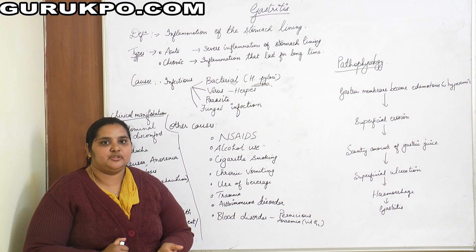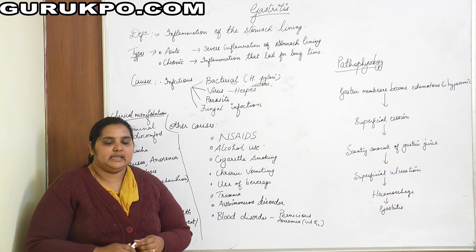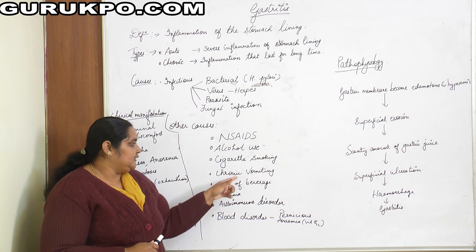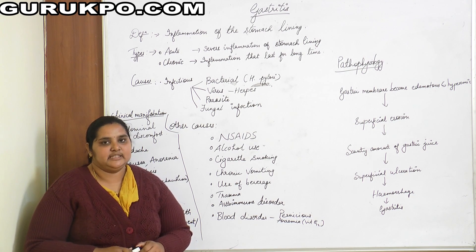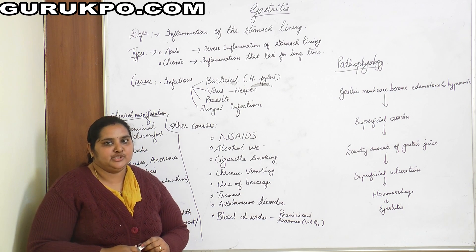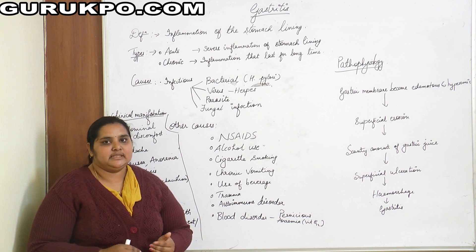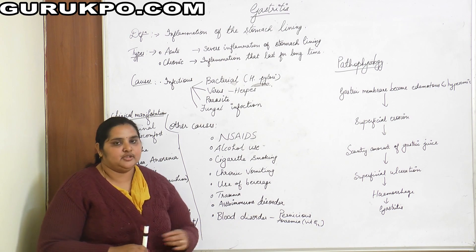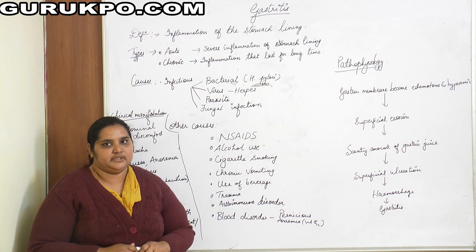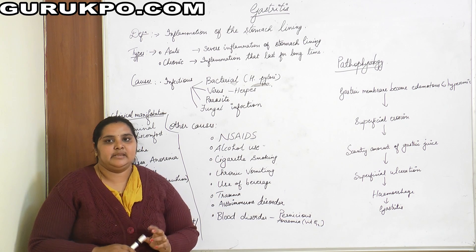Chronic vomiting can disturb the gastric mucosa and is also a cause of gastritis. Use of beverages also causes disturbance in the stomach lining. Trauma or injury to the stomach is another cause. Autoimmune disorder, where the immune system attacks its own organs, is also a cause. Blood disorders such as pernicious anemia, involving vitamin B12 deficiency, can cause gastritis and mucosal irritation.